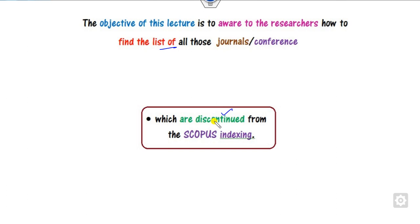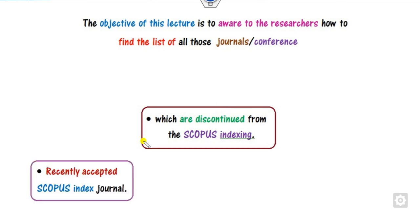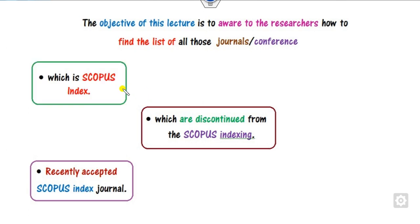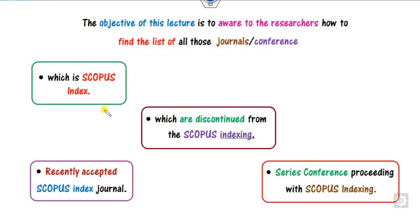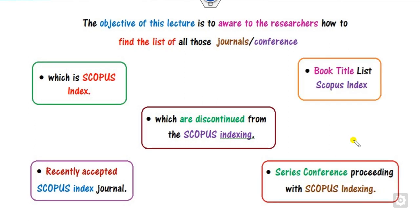Apart from discontinued Scopus journals, we will also see all those journals which are recently accepted for Scopus indexing, all those journals and conferences which are Scopus indexed so far, how you can find series conferences indexed by Scopus, and how you can find book titles which are indexed in Scopus.